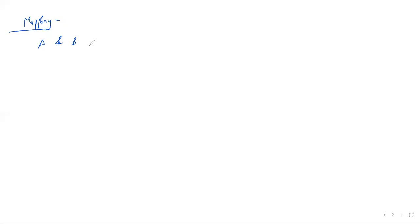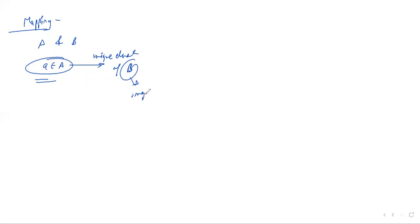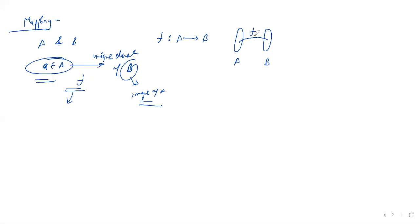If each element in A is assigned a unique element of B — where B is called the image of A — then the collection of all such unique assignments is called the mapping. We say F is the mapping from A to B, where a ∈ A and F(a) ∈ B. F(A) is the set of images of A, also called the range of F.